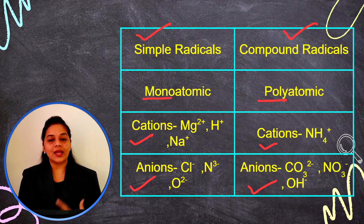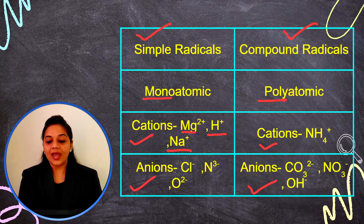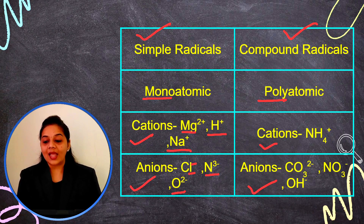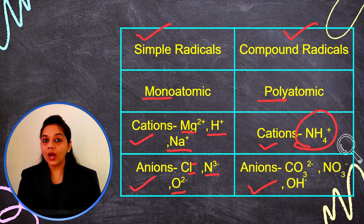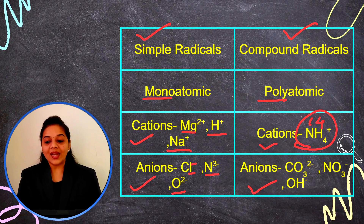Let's see examples of monoatomic and polyatomic cations and anions. Monoatomic cations: magnesium ion, hydrogen ion, sodium ion — they carry a positive charge. Monoatomic anions: chloride, nitride, oxide — they carry a negative charge. For polyatomic cations: ammonium ion, made from nitrogen and hydrogen — one nitrogen and four hydrogen atoms. Polyatomic anions: carbonate, nitrate, and hydroxide ion.